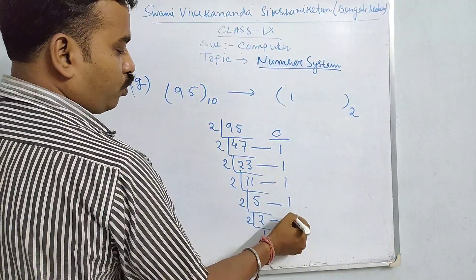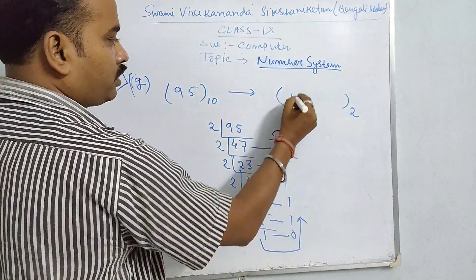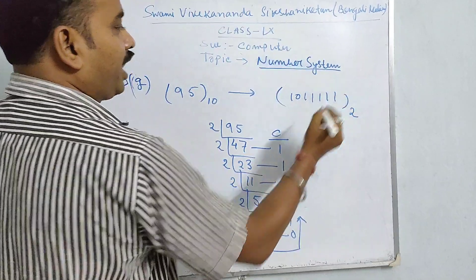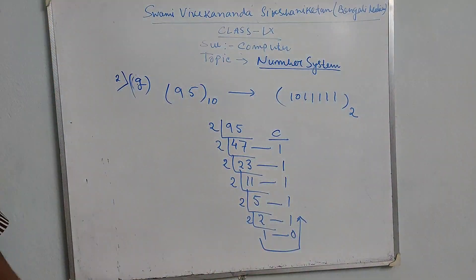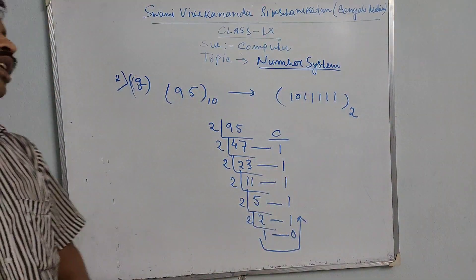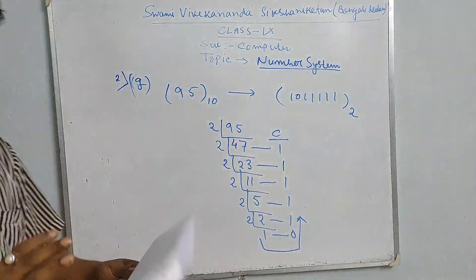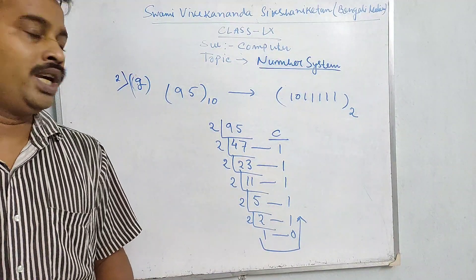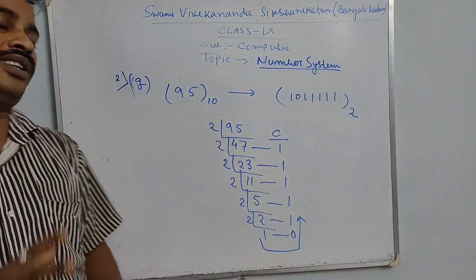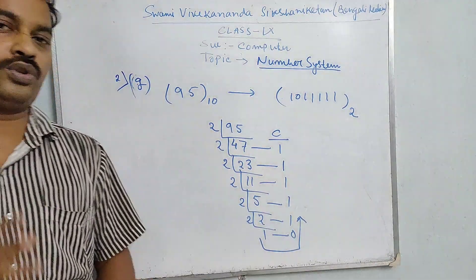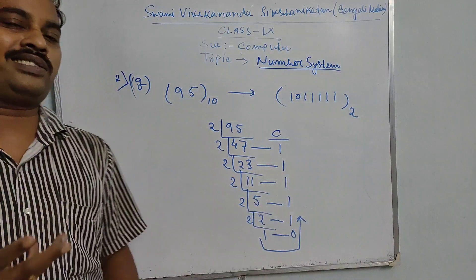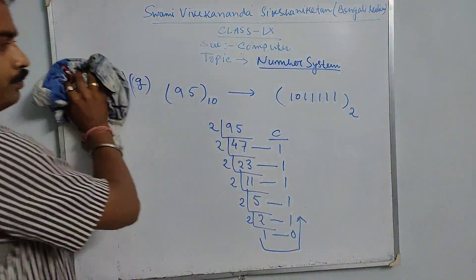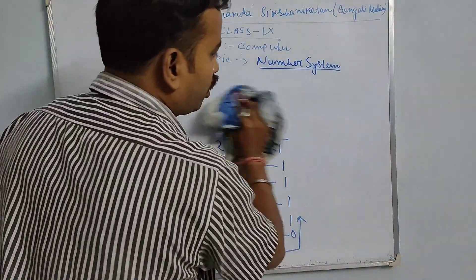The answer is 1011111 — reading the carries from bottom to top. That is how a decimal number is converted to binary.